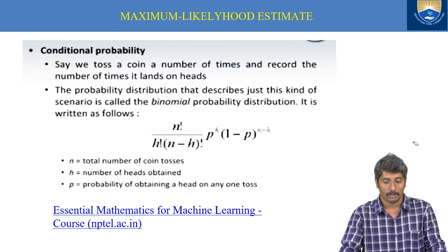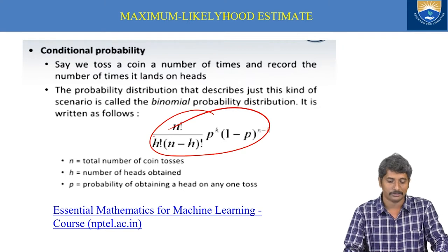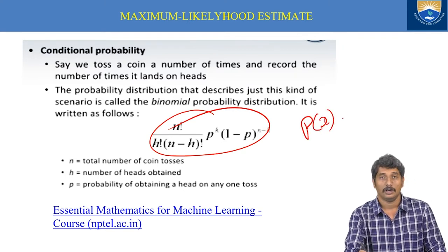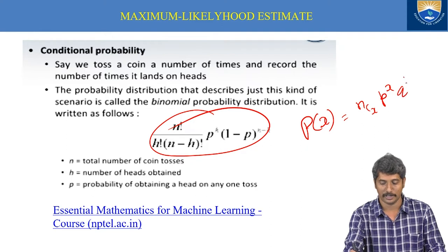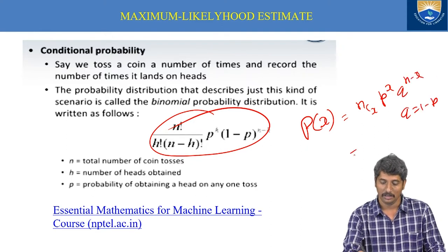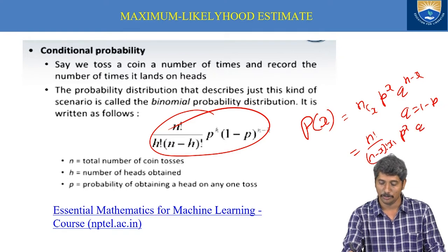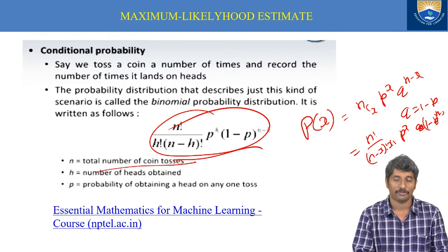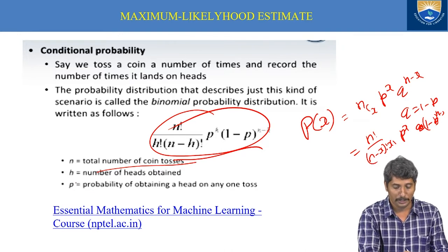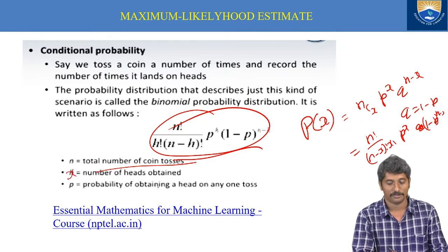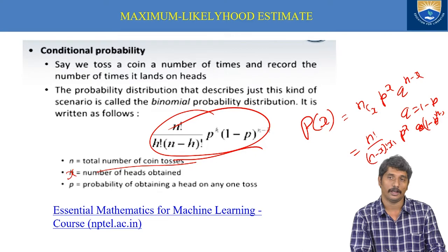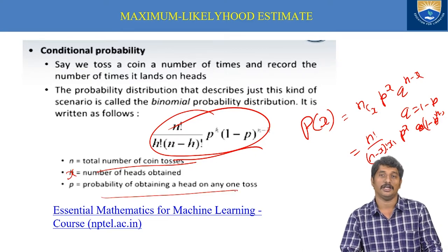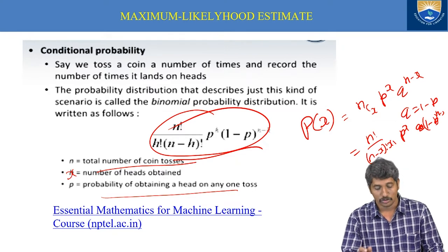The binomial distribution formula states that the probability of winning exactly x successes out of n trials is P(x) = nCx · p^x · q^(n−x), where q = 1 − p and nCx = n! / ((n−x)! · x!). Here n is the total number of tosses, x is the number of heads desired, p is the probability of obtaining a head, and q is the probability of obtaining a tail.